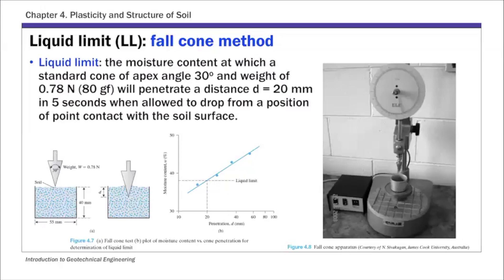Another test to determine liquid limit is the fall cone method. In this test, you have a soil paste — your clay sample — and the liquid limit is defined as the moisture content at which a standard cone with an apex angle of 30° and weight of 0.78 N penetrates a distance of 20 mm in 5 seconds. As with the percussion cup method, you prepare multiple soil samples, fit a straight line to the data, and read off the liquid limit from the curve.